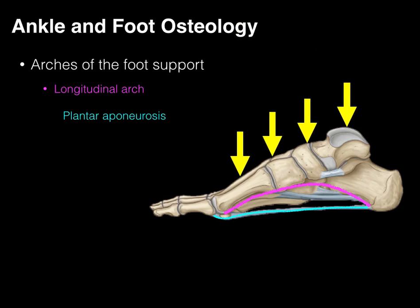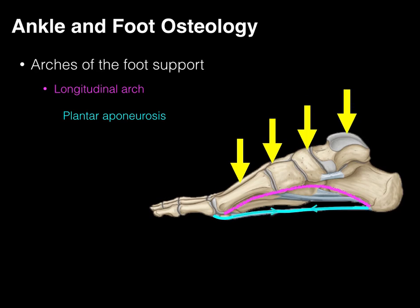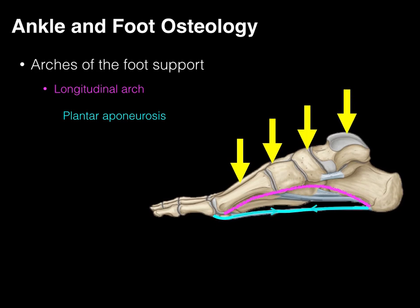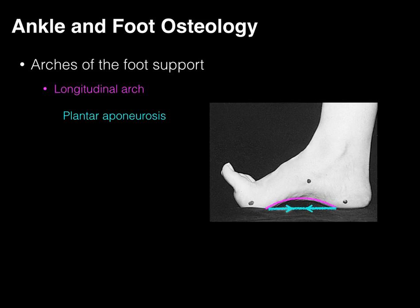The yellow arrows represent the force when you take a step. When you take a step, the plantar aponeurosis tightens, and by tightening it helps keep the arch up — that is one of the functions of the plantar aponeurosis. Additionally, when the great toe extends, it increases the arch and tightens the plantar aponeurosis further. This toe extension produces what is called the windlass mechanism: by extending the toe, it pulls the calcaneus towards the heads of the metatarsals, making the arch higher.